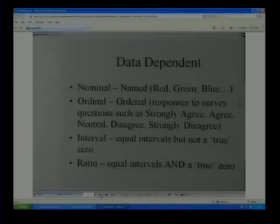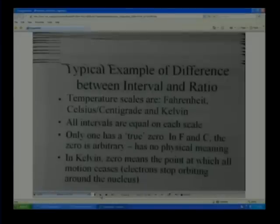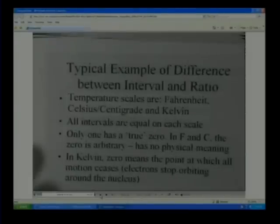But something else that doesn't have a physical meaning associated with a zero would just be an interval. And so there's a classic example that you may see every once in a while. There's three temperature scales, the Fahrenheit, Celsius, the centigrade, and the Kelvin. And all of these are measured on equal scales, on the scale.